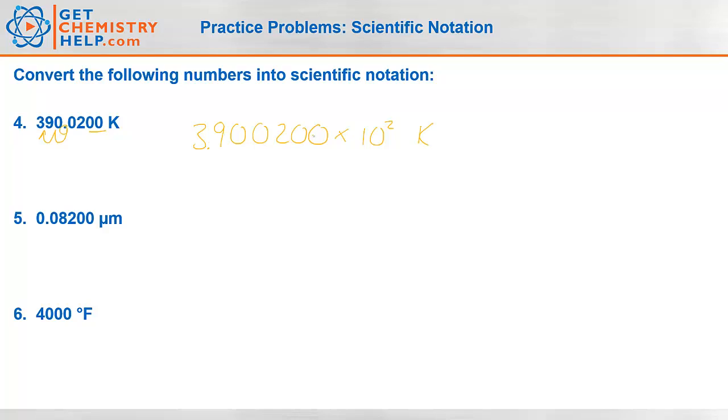And notice all these digits are significant. So there were seven significant figures here. So there still has to be seven significant figures here. It can't change between standard and scientific notation. I have to keep all the same significant figures.